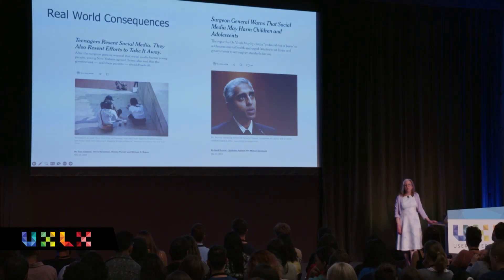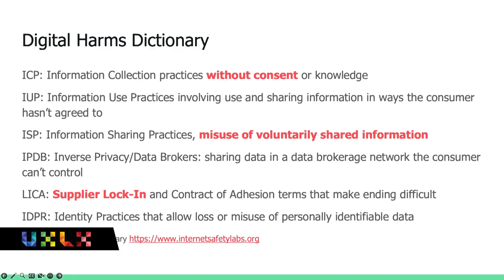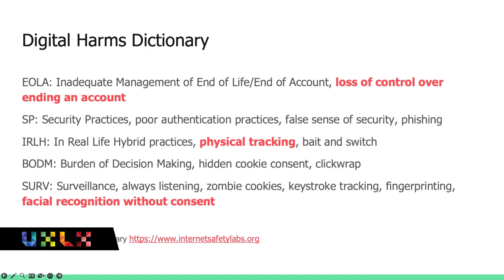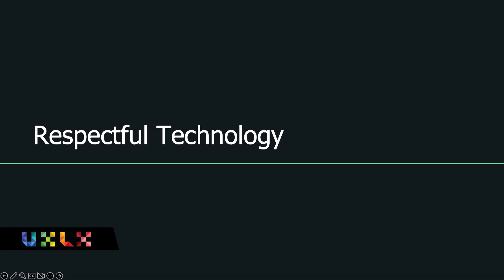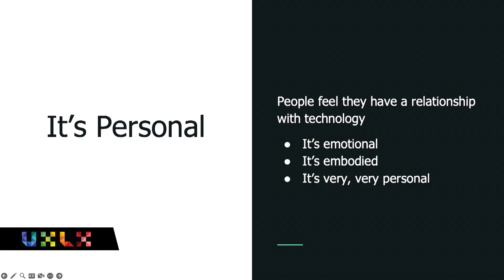Some of the work we're doing at the Internet Safety Labs is developing a dictionary of digital harms. Familiar items include physical tracking, facial recognition without consent, and any kind of manipulation and bias in the way content is filtered and delivered to individuals. We discuss this in a framework of respect: are we respecting the people who are using our products?